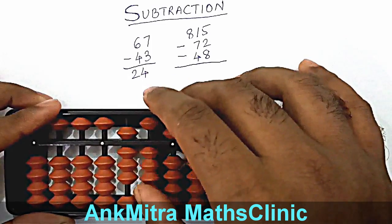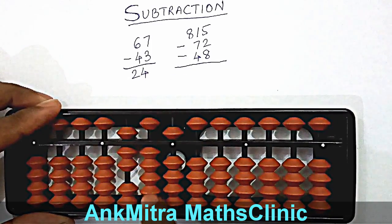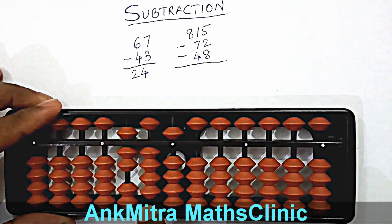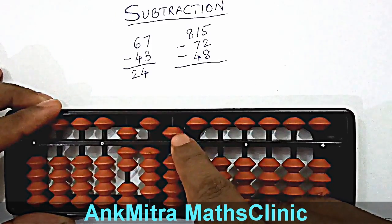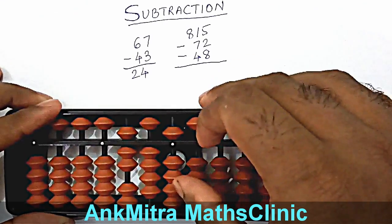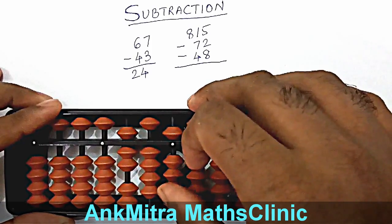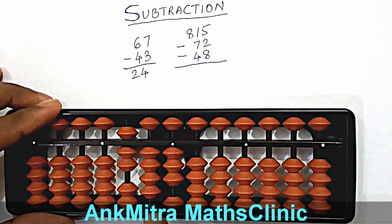So we'll add 3 and subtract 10 on the next left rod, which will complete the subtraction of 70. Now coming to subtraction of 2 on the units place — we have 5 available for subtraction, so we can use the small friend formula here. Small friend of 2 is 3. So we'll add 3 and subtract 5, which will complete the subtraction of 72.